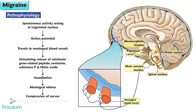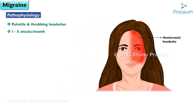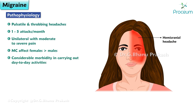Vasodilation of the meningeal vessels causes meningeal edema, and since these vessels are highly innervated, the edema causes compression of nerves against the skull, generating severe headaches. One side of the trigeminal nucleus is stimulated at a time, hence the headache is hemicranial and shifts sides. Migraines most commonly affect females and cause considerable morbidity in day-to-day activities.